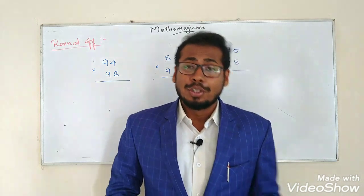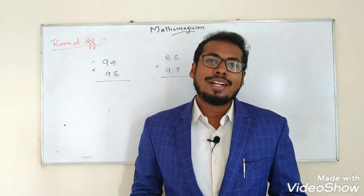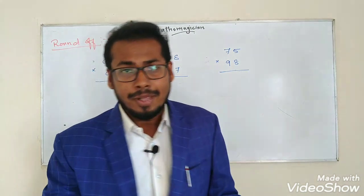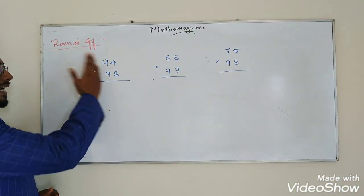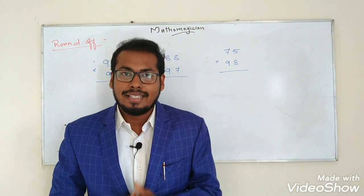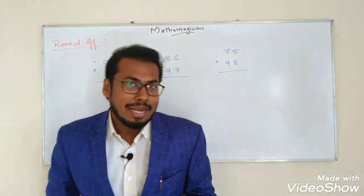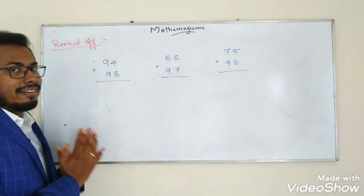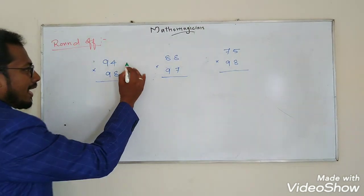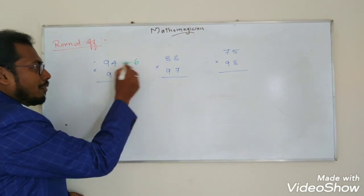Next time, Round Off method. For 2-digit by 2-digit numbers, this is easy to answer - you can follow this method. Round off method: first example, 2-digit by 2-digit number 94 times 98. Find the number close to a round number - here it is 100. So 94 is 100 minus 6, and 98 is 100 minus 2.